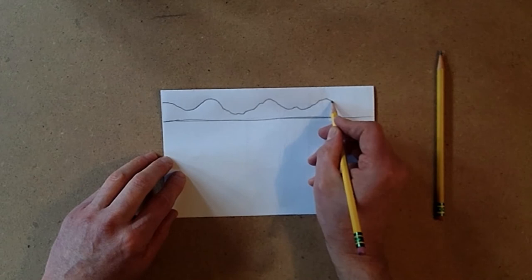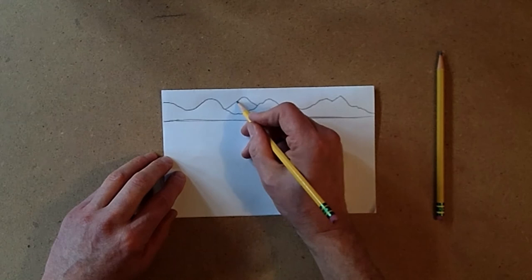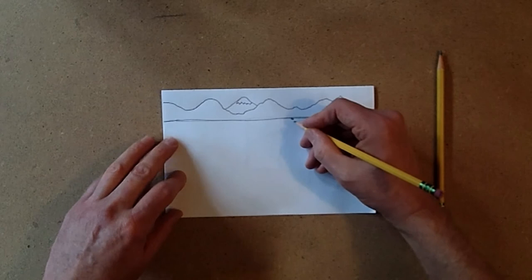Trying to make them different, uneven. And for the sense of space, we'll put another one right here. It's going behind.